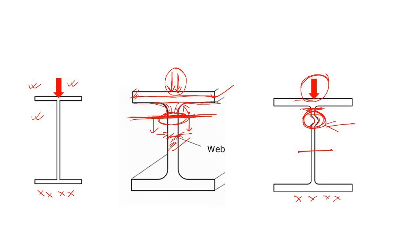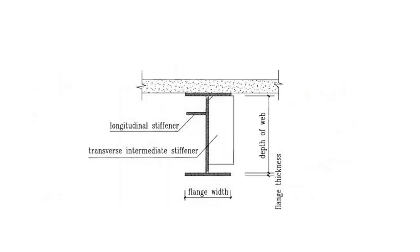In the case of web crippling, you can provide a stiffener, but the stiffener is only needed for the depth near the flange — the most critical zone. After that depth, there is no chance of crippling. That is why in these cases we provide an intermediate stiffener or half-depth stiffener; the stiffener is not provided for the whole depth and the bottom remains clear.